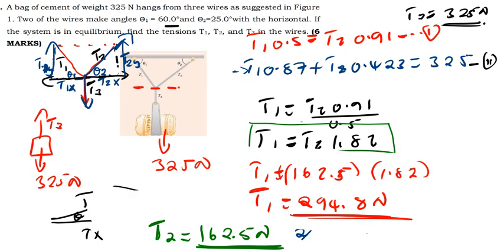So I have T1, T2, and T3 — the question is solved. This question is interesting because you need to understand static equilibrium. Remember two things: the summation of forces in the x-direction equals zero, and the summation in the y-direction equals zero. Start with forces in x and then y. Sometimes a problem only needs one direction, but here I had to separate into two because T3 appeared in between.